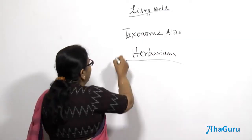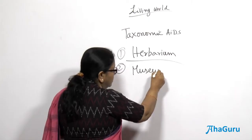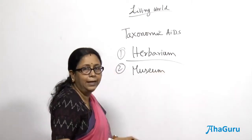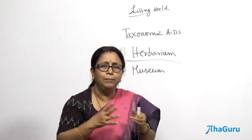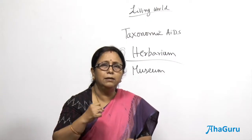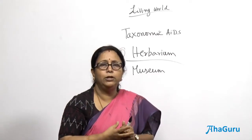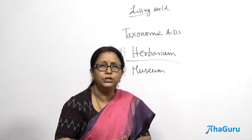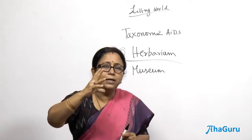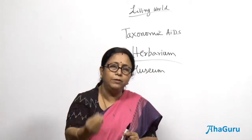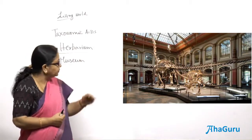Apart from herbarium, there are many others — for example, museums. Museums are also a taxonomical aid. In museums, they do not use living animals or plants. They take dead animals and either use the skeleton to show them, stuff the animal and display it, or preserve it in a chemical and put it for exhibition. Museums label everything, so they act as a taxonomical aid. Somebody wanting to classify something can go and refer to specialized museums.